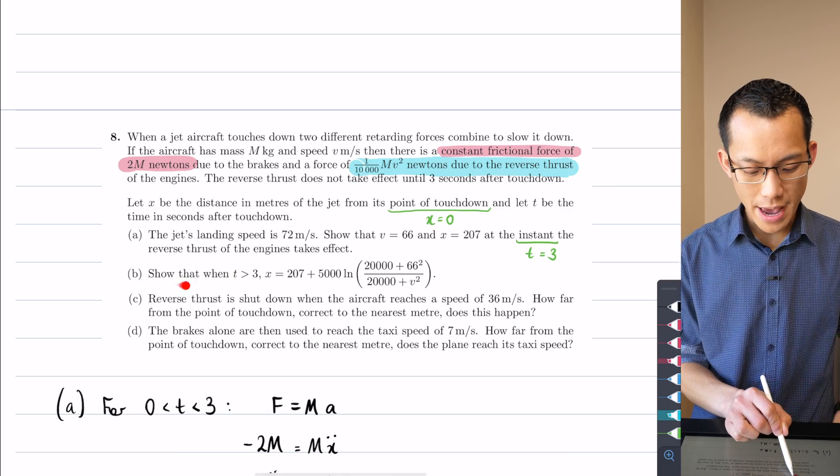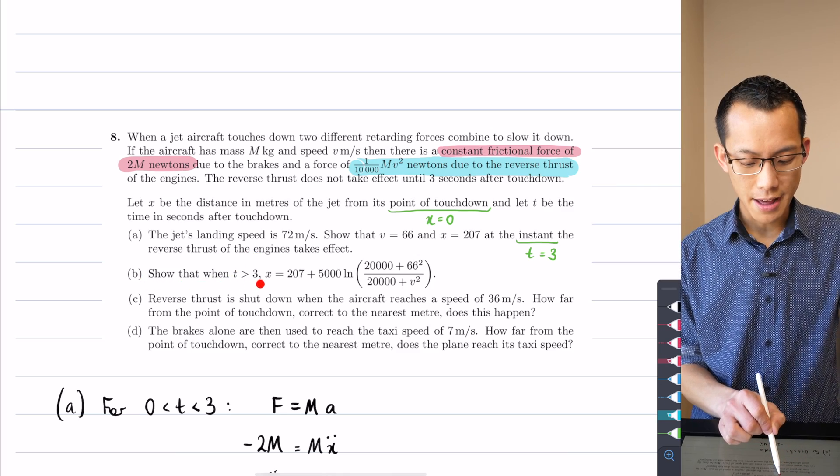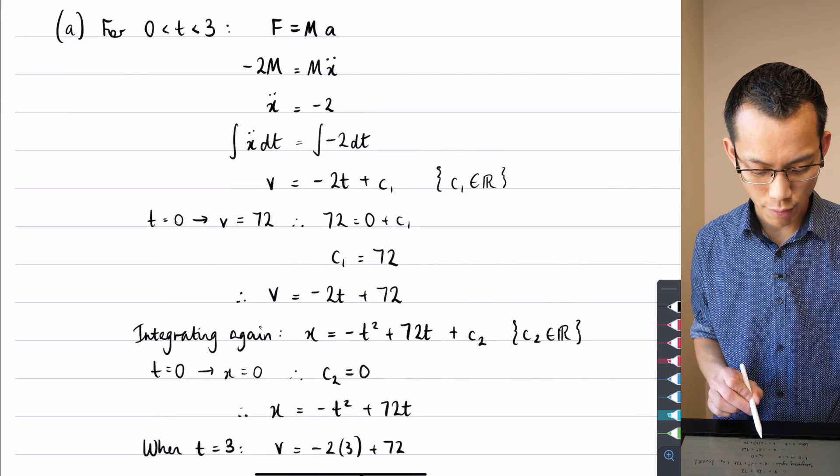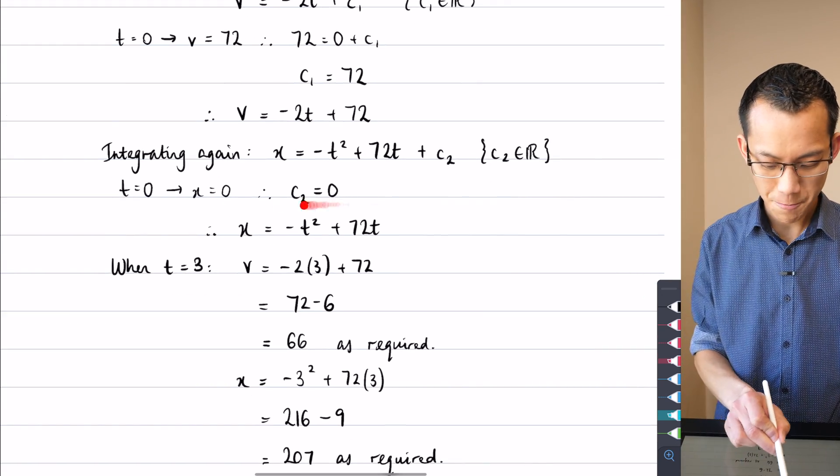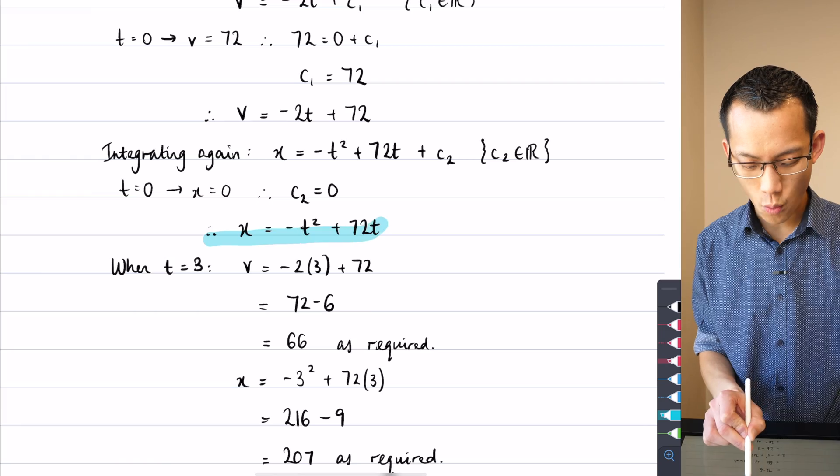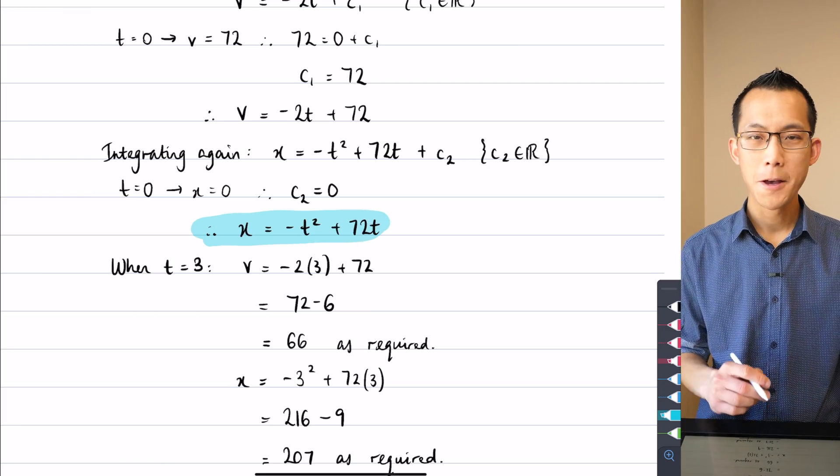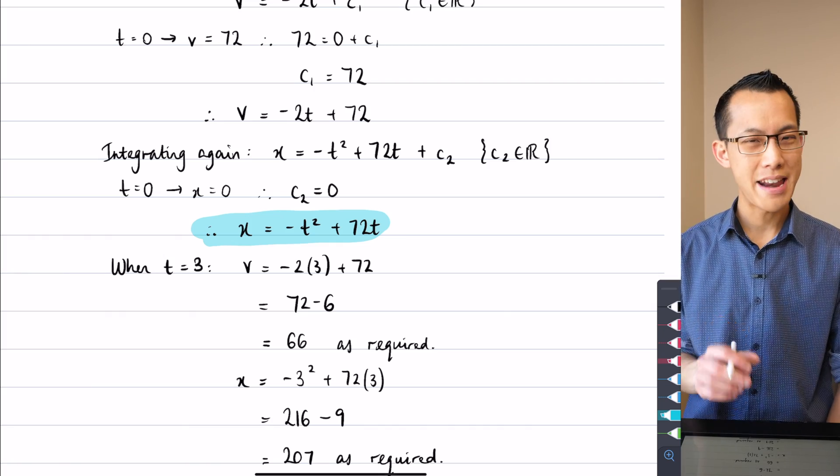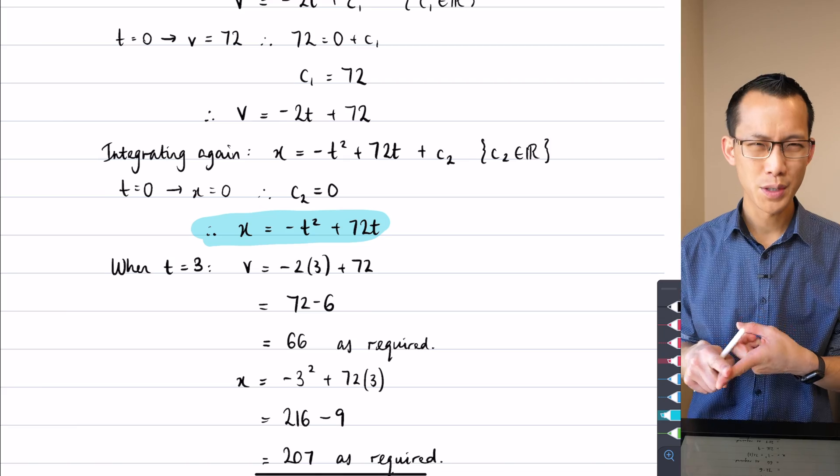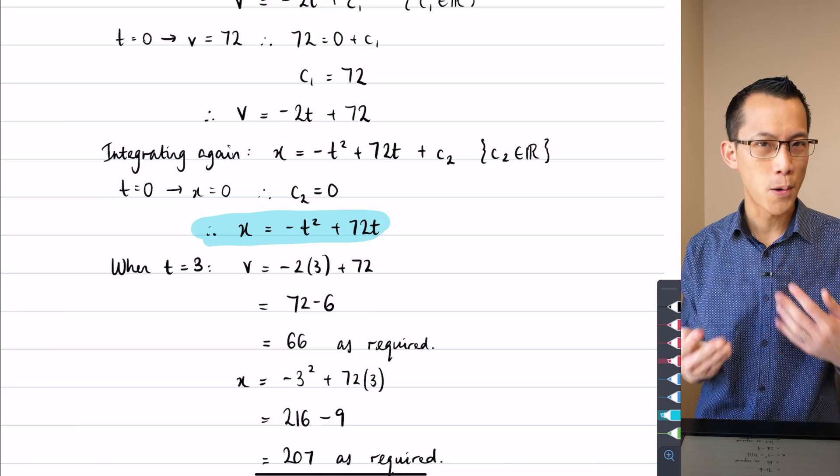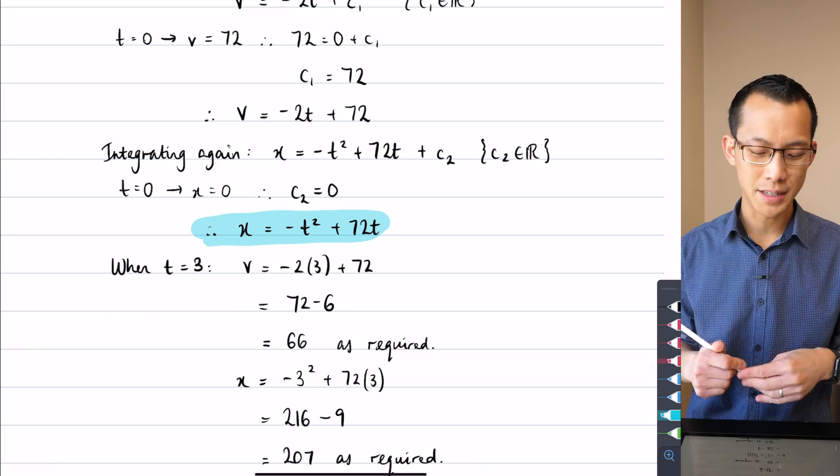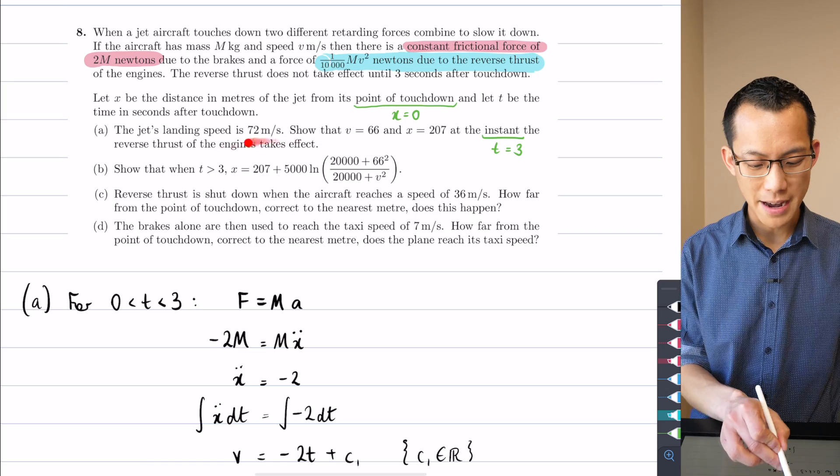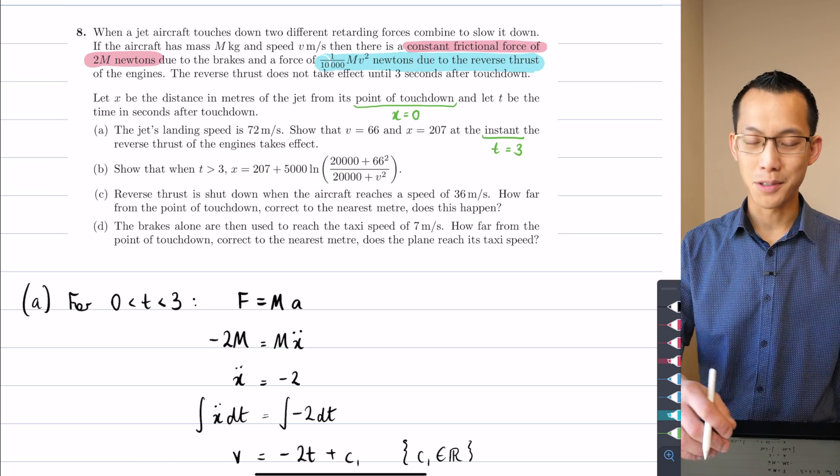And then part B. Show that when t is greater than 3, x is given by this different displacement model kicking in. This is the displacement model that works for the first three seconds, but it gets replaced by this dramatically more complicated displacement model because I now have to take into effect not just this constant frictional force, but also this reverse thrust which is proportional to the square of the velocity. This is our sort of resistive motion type situation. So this is going to be my destination. This is where I want to go.